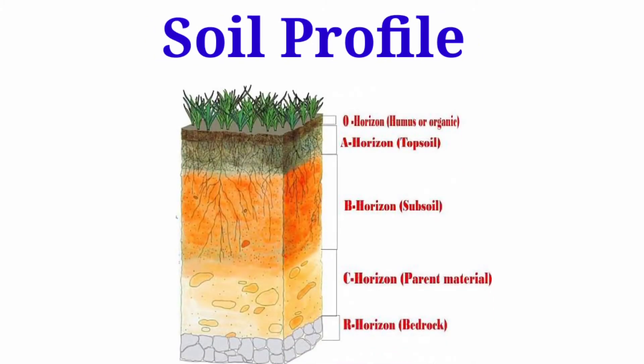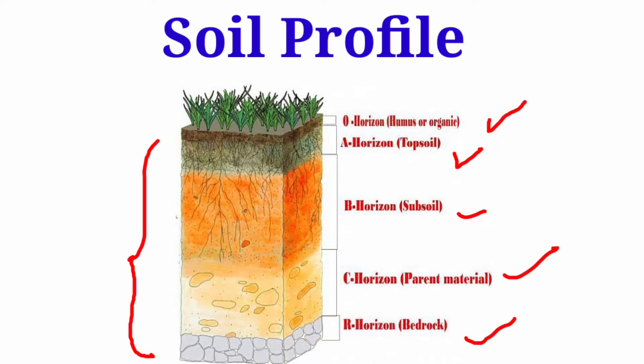Soil Profile is a vertical section through the different layers of the soil. Each layer is different in color, texture, depth, and chemical composition, and it is called a horizon. Now let us discuss all the horizons of the soil profile.